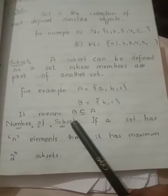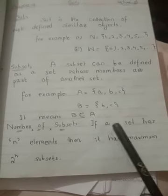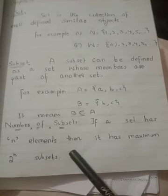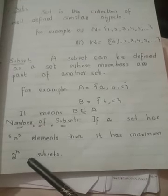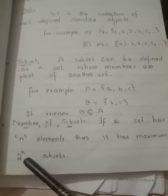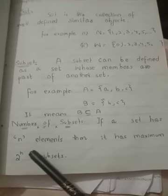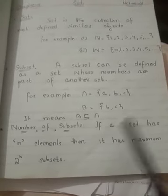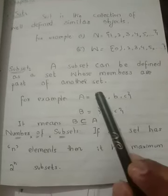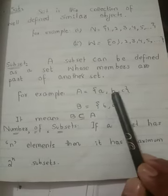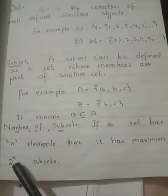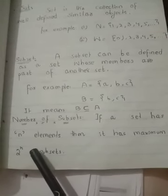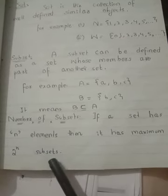Number of subsets. If a set has n elements then it has maximum 2 power n subsets. This is our formula that we use in our next exercises and this will help a lot in finding total number of subsets. See here how many elements are there? There are three elements so the number of total subsets will be 2 power 3 equal to 8. So total number of subsets will be 8.